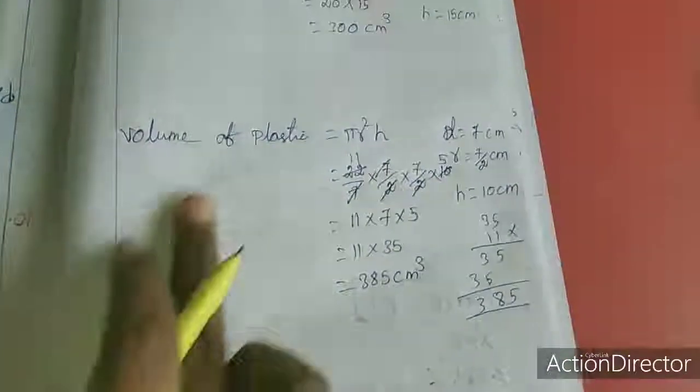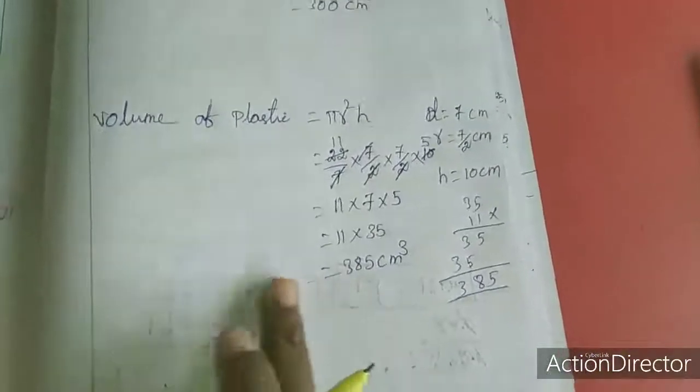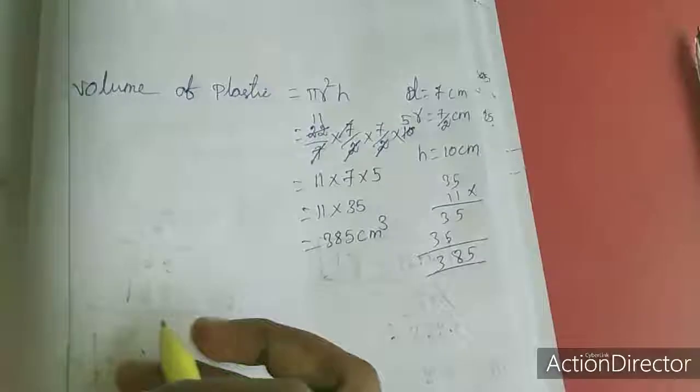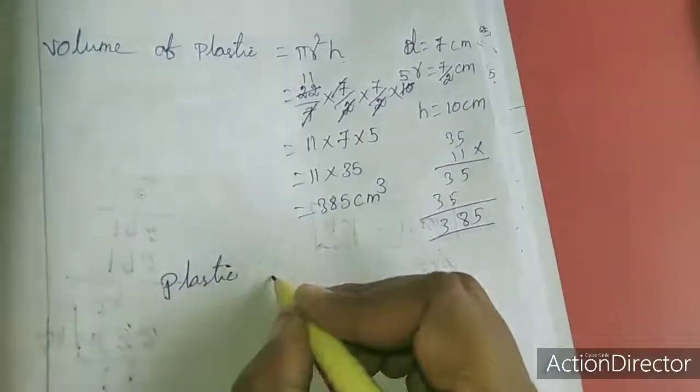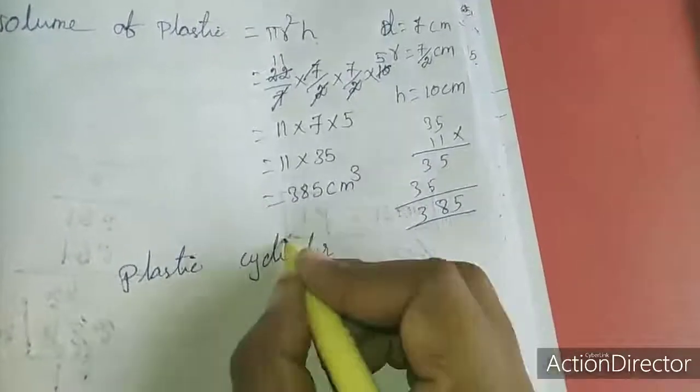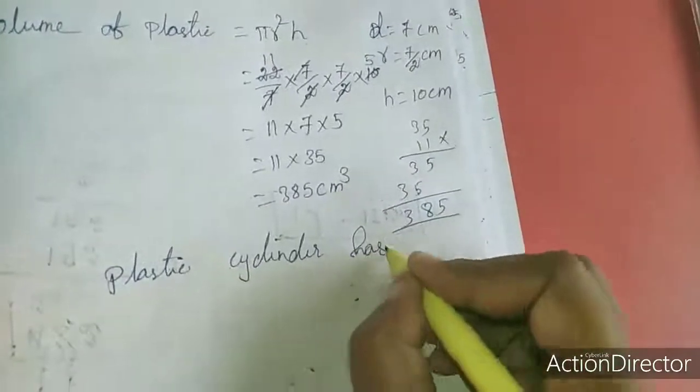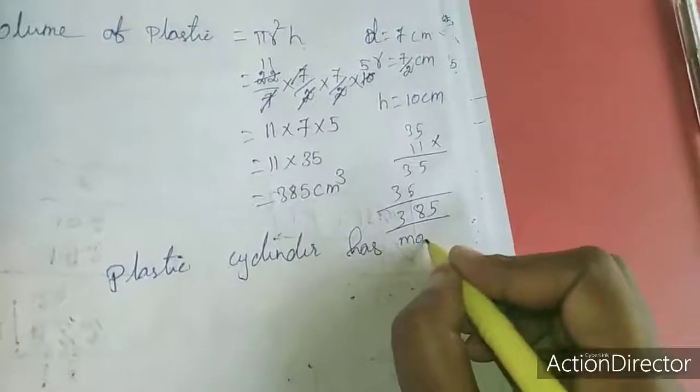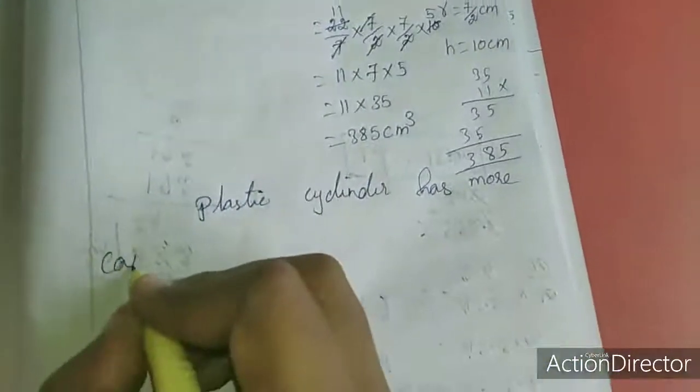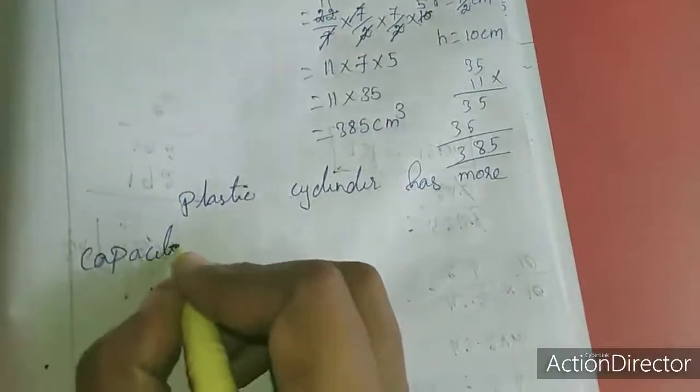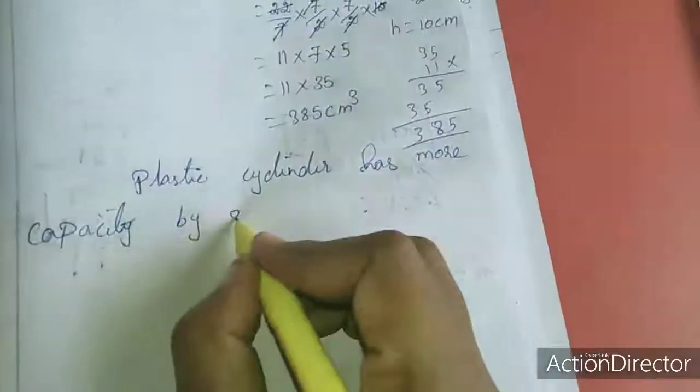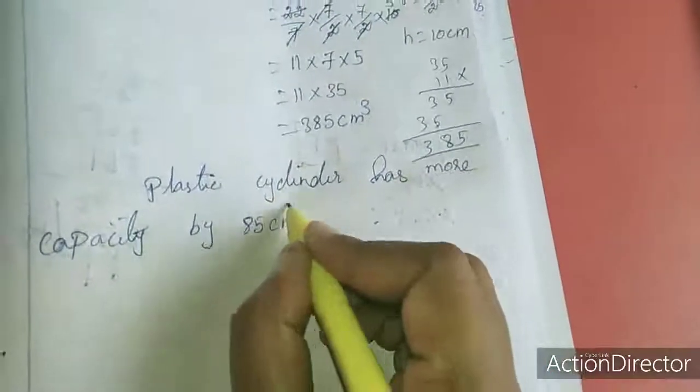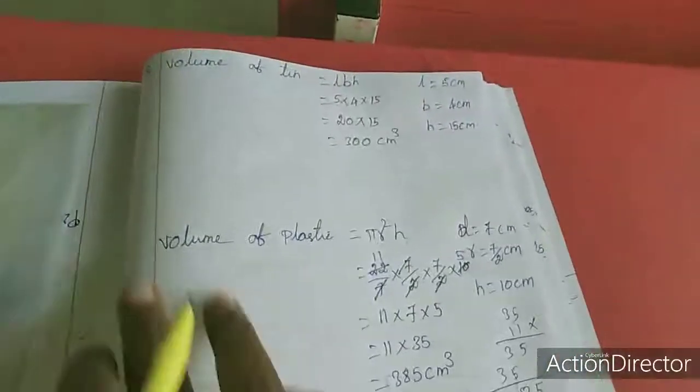The plastic cylinder has more capacity. By how much? 385 minus 300 equals 85 cubic centimeters. So the plastic cylinder has more capacity by 85 cubic centimeters.